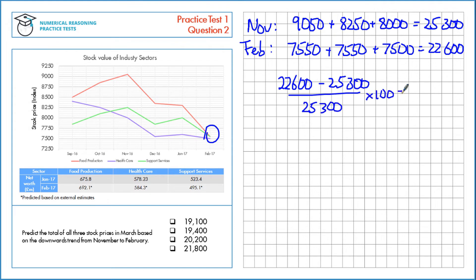Multiplied by 100 gives us minus 10.7%. This is over three months but we want one month. If we divide by three here, that gives us an approximate decrease of 3.6% per month.